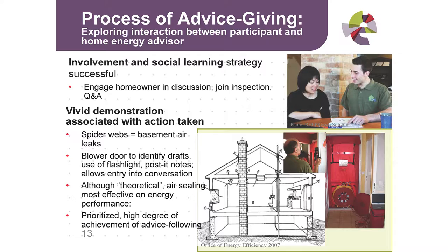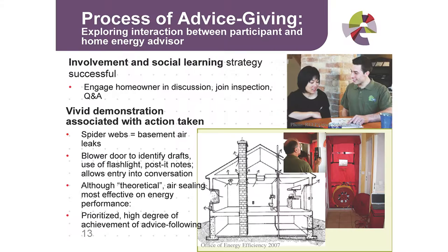Some of my research used a dataset of EnerGuide and EcoEnergy houses in the region of Waterloo. The residential energy efficiency program there did better than the national average in terms of program delivery and is a highly credible organization with a lot of community trust. We interviewed some of the home energy advisors and found that engagement is fairly important. One key technique was putting a blower door in the house, then having people go around and feel the air leaks, put post-it notes, look at spider webs — things that were really visual. Even though it's theoretically difficult for people to air seal their houses, they did better on that decision than on most other decisions they had to make.